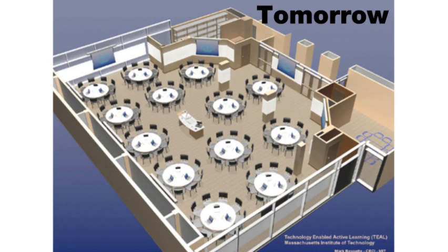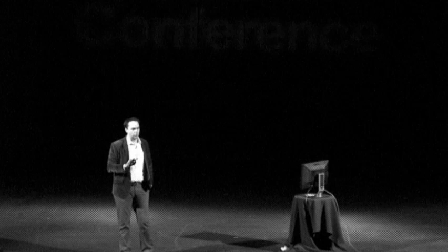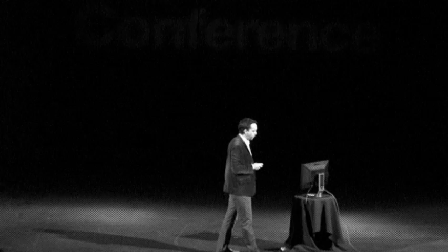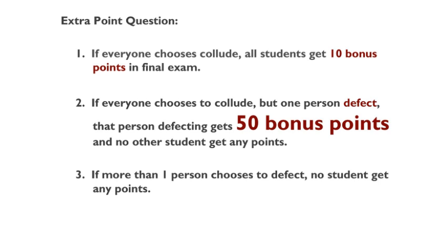What I'm going to do now is give you another example of an activity I do in class to illustrate this idea. As I show you this activity and invite you into my class, I want you to think about whether you can replicate what I'm going to show you online. Here's what I do in my class when I talk about game theory about two weeks before the exam: I give an extra point question — a real extra point. You're going to have two choices: to collude or to defect, and you're going to vote with your clickers.